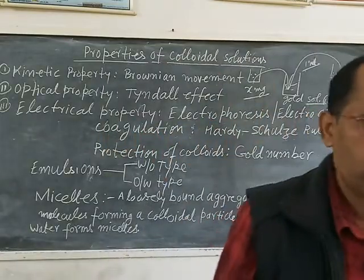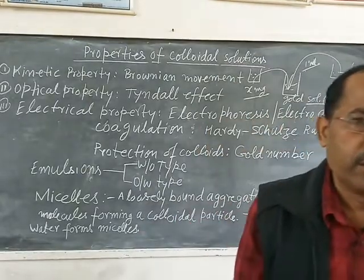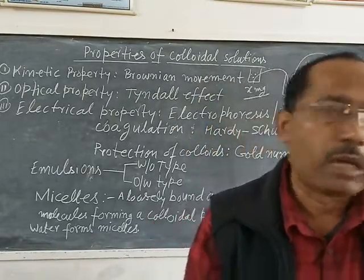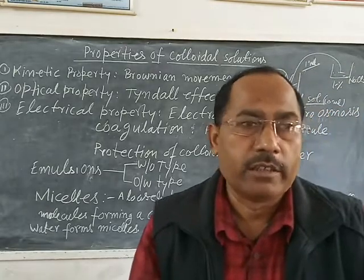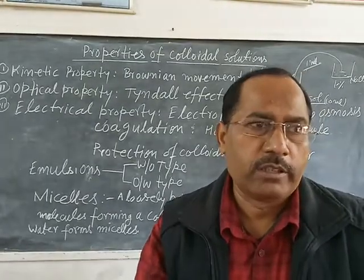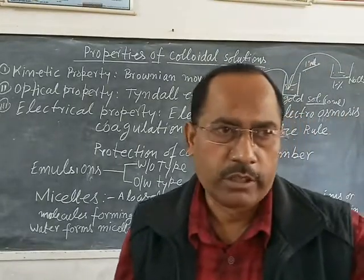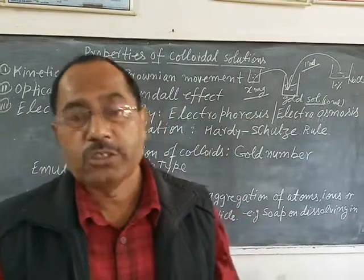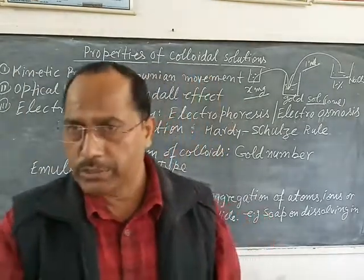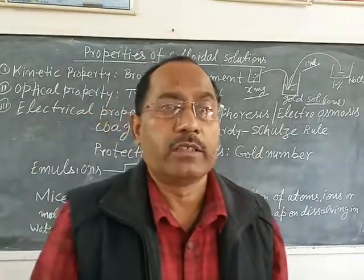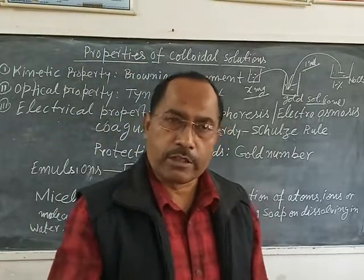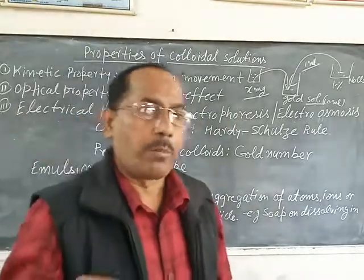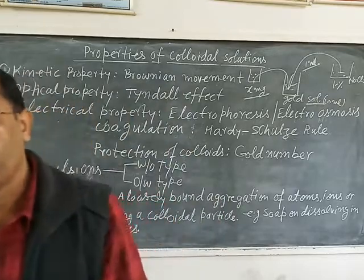In summary, surface chemistry has three parts: adsorption (covering absorption vs. adsorption, physisorption vs. chemisorption, and terms like adsorbate, adsorbent, sorption, desorption); catalysis (definition of catalyst, types and theories of catalysis with examples); and colloidal solution (definition, particle size, classification, methods of preparation, properties, and applications). Thank you.